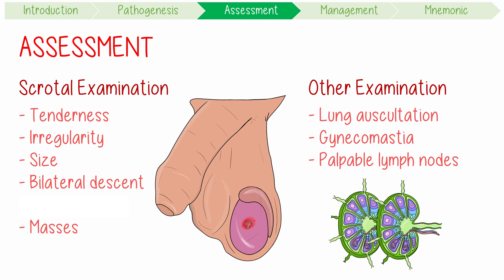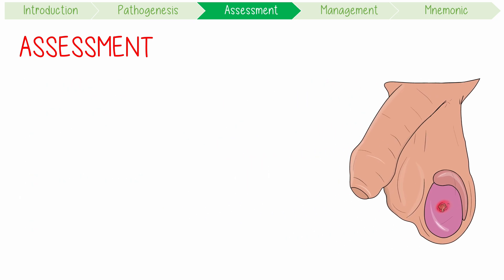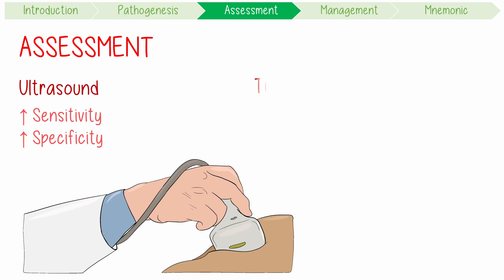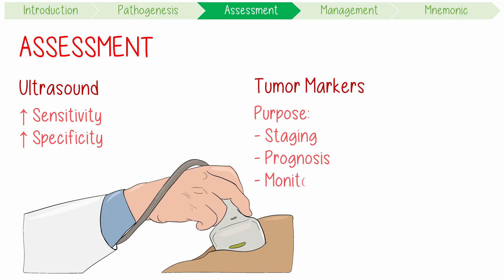The most important investigation is testicular ultrasound, which has very high sensitivity and specificity. Tumour markers can be used for the purposes of staging, prognosis, and monitoring. These include alpha-fetoprotein (AFP), beta-HCG, and lactate dehydrogenase (LDH).